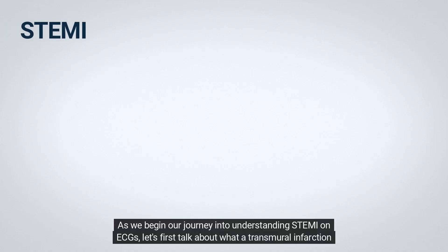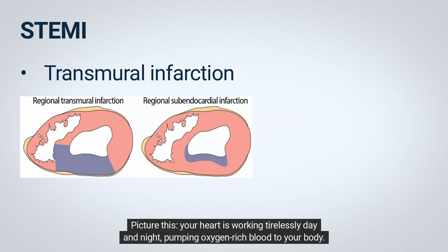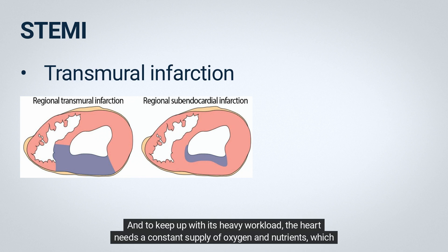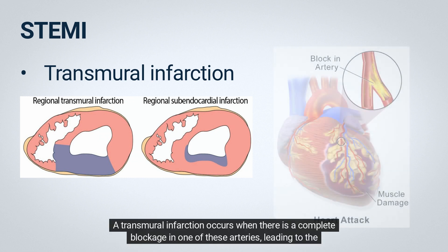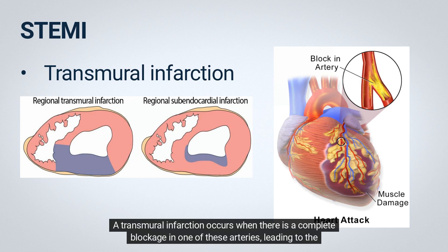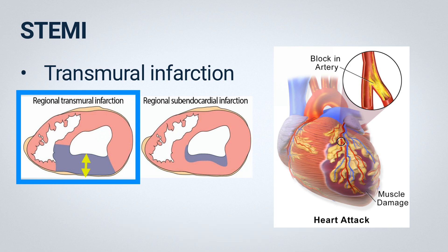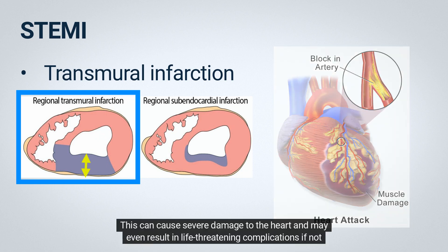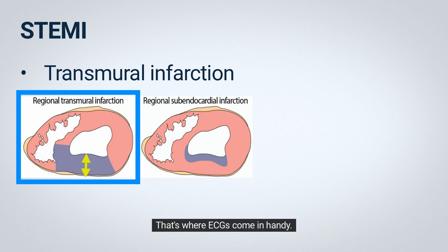As we begin our journey into understanding STEMI on ECG, let's first talk about what a transmural infarction actually is. Your heart is working tirelessly day and night, pumping oxygen-rich blood to your body. To keep up with its heavy workload, the heart needs a constant supply of oxygen and nutrients, which it gets through the coronary arteries. A transmural infarction occurs when there is a complete blockage in one of these arteries, leading to the death of the full thickness of the heart muscle wall in the affected area. This can cause severe damage to the heart and may even result in life-threatening complications if not treated immediately. That's where ECGs come in handy.